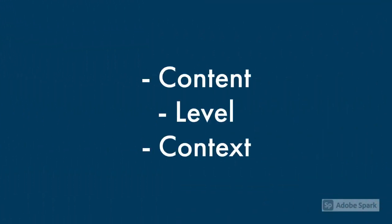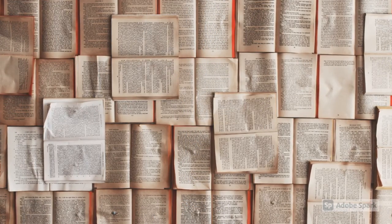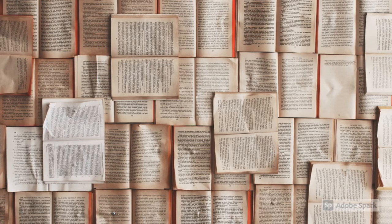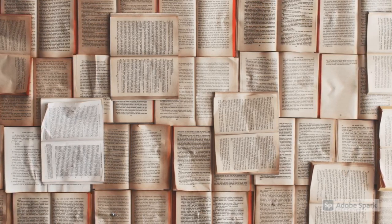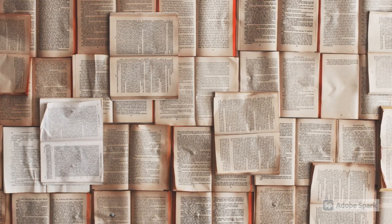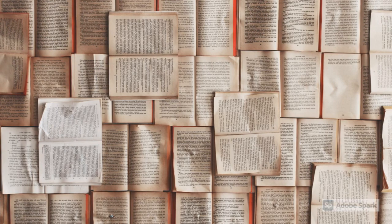So to decide whether something is really relevant, think about three things: the content — what the information is specifically about; the level — how detailed, academic, or advanced it is; and the context — when and where it relates to. Considering these three things can help you reduce information overload and focus on reading the most relevant information. It's good to read multiple different sources, but it's even better to make sure that all of those multiple sources are relevant to your needs.